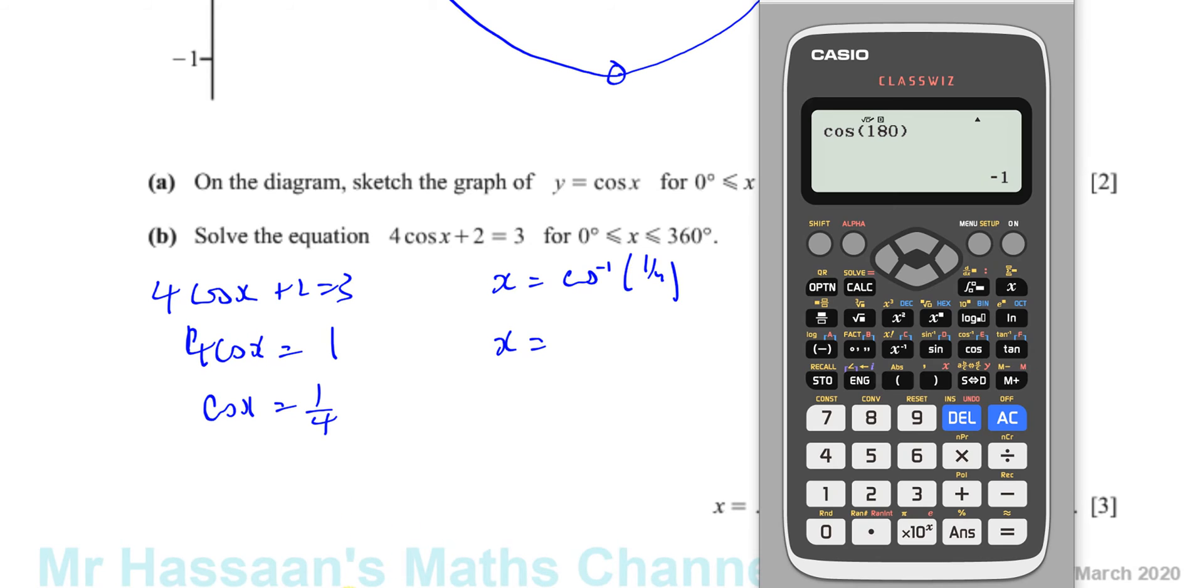So we have inverse cosine of a quarter. We're in degree mode, so we're fine. And that gives us 75.522°.